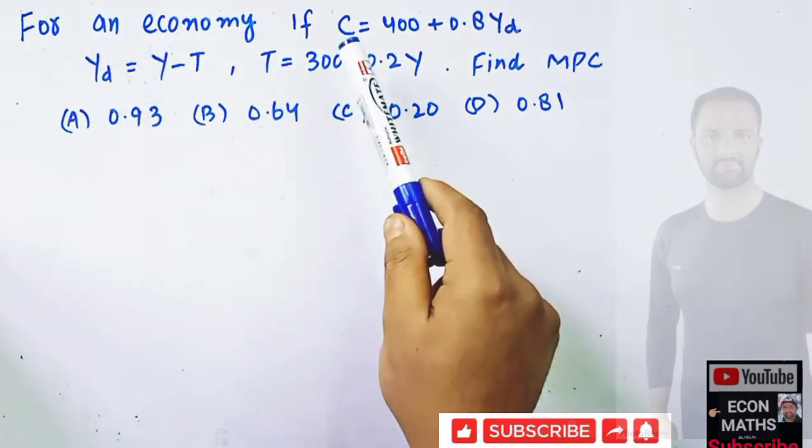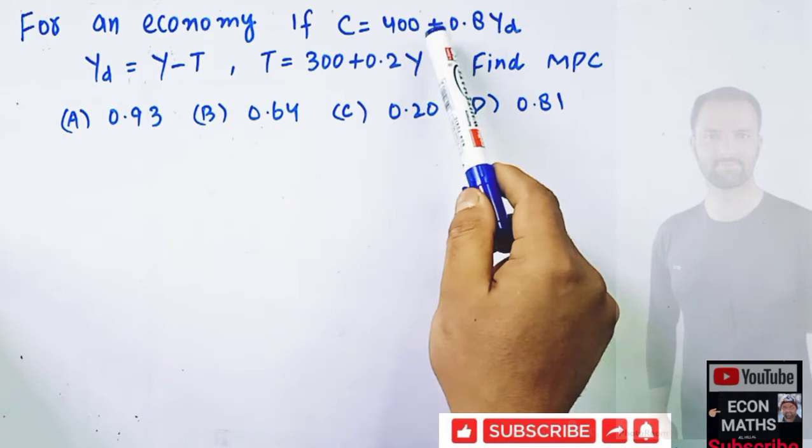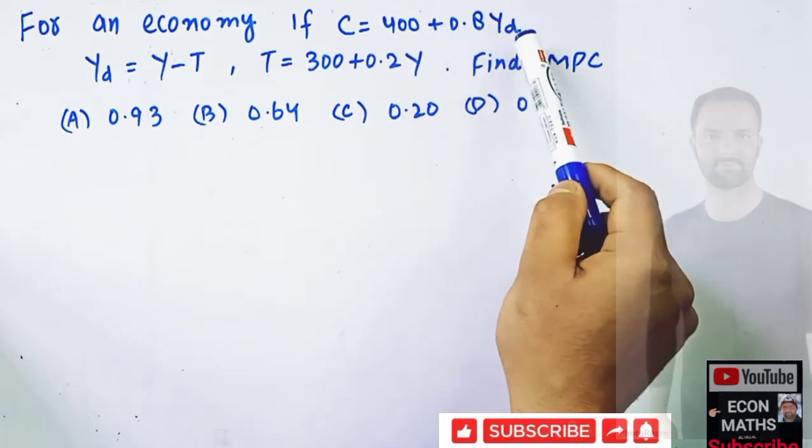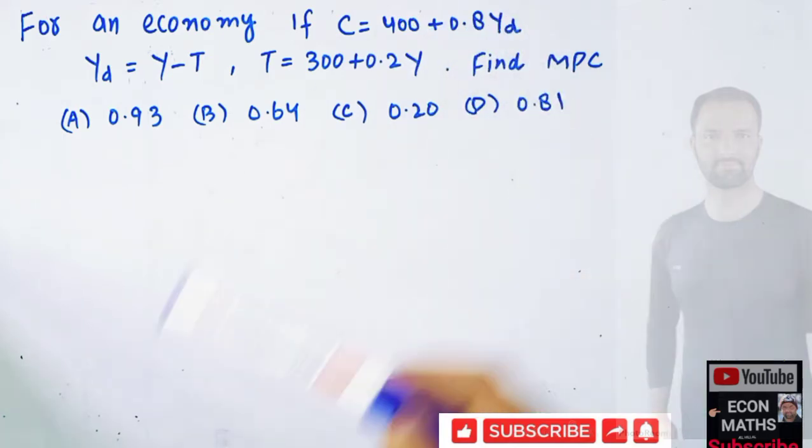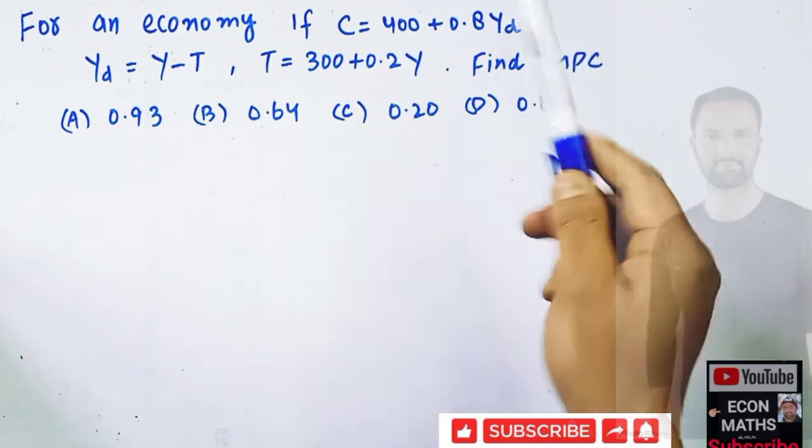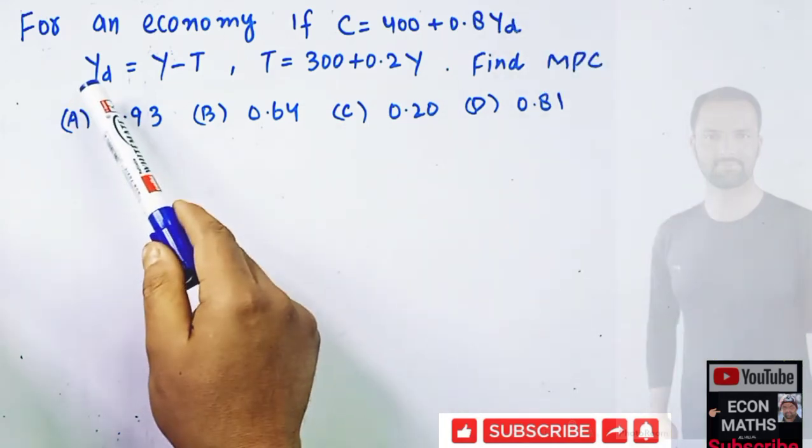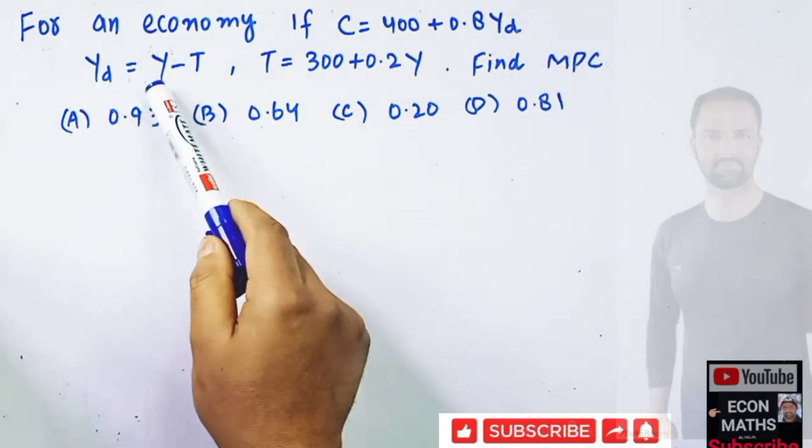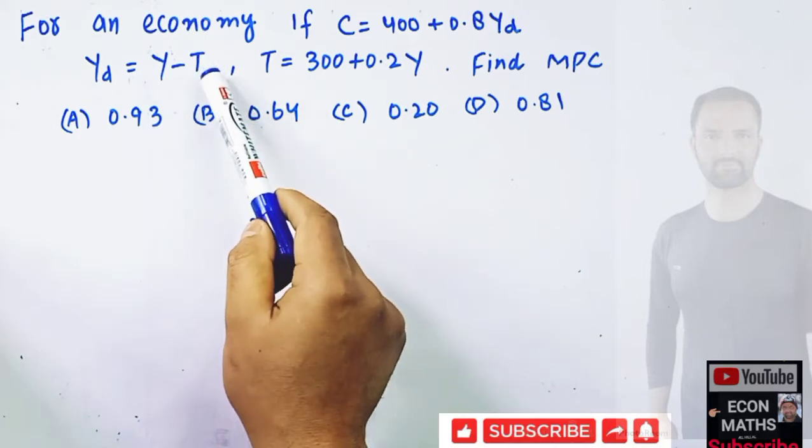For an economy, if consumption function is 400 plus 0.8 Y subscript d, where Y subscript d denotes the disposable income, and Y subscript d equals Y minus T. That means when we subtract the taxes from the income we get the disposable income.